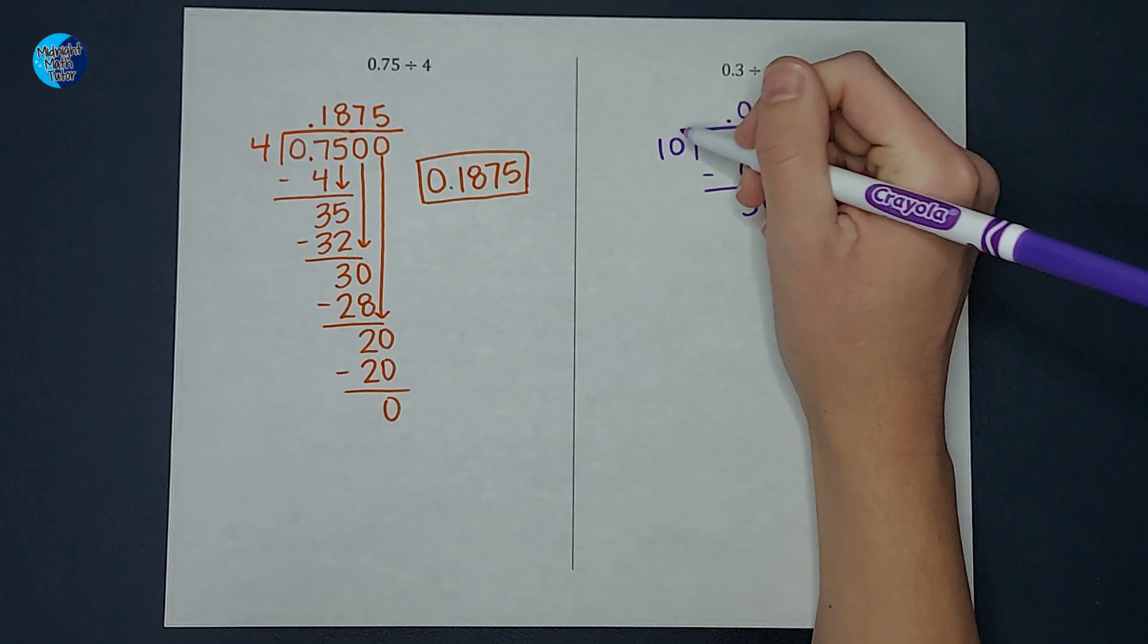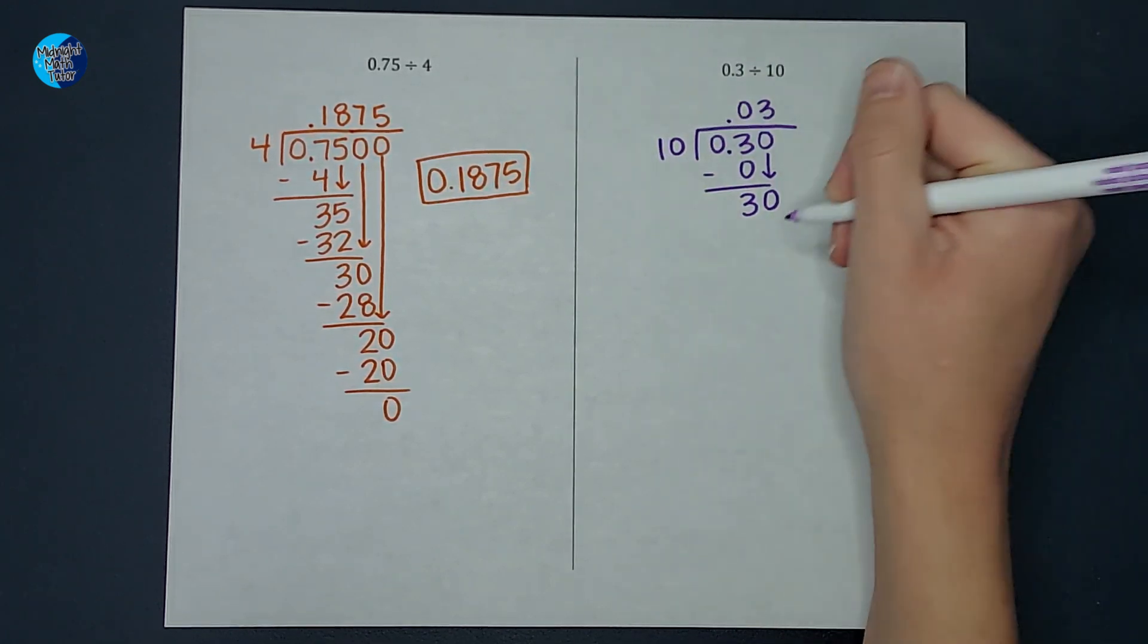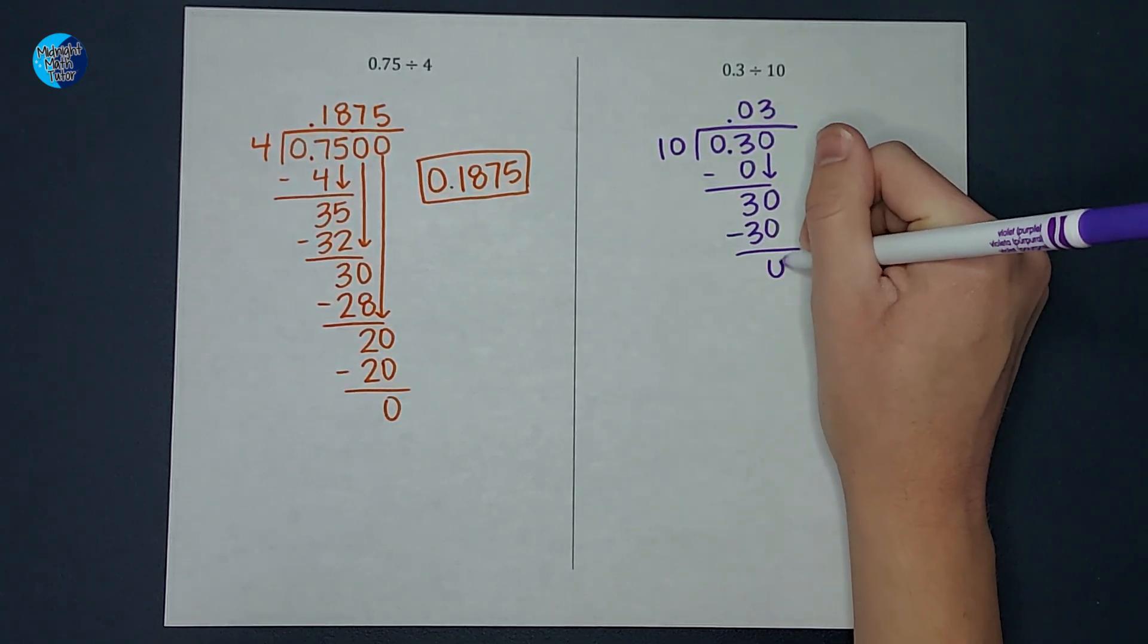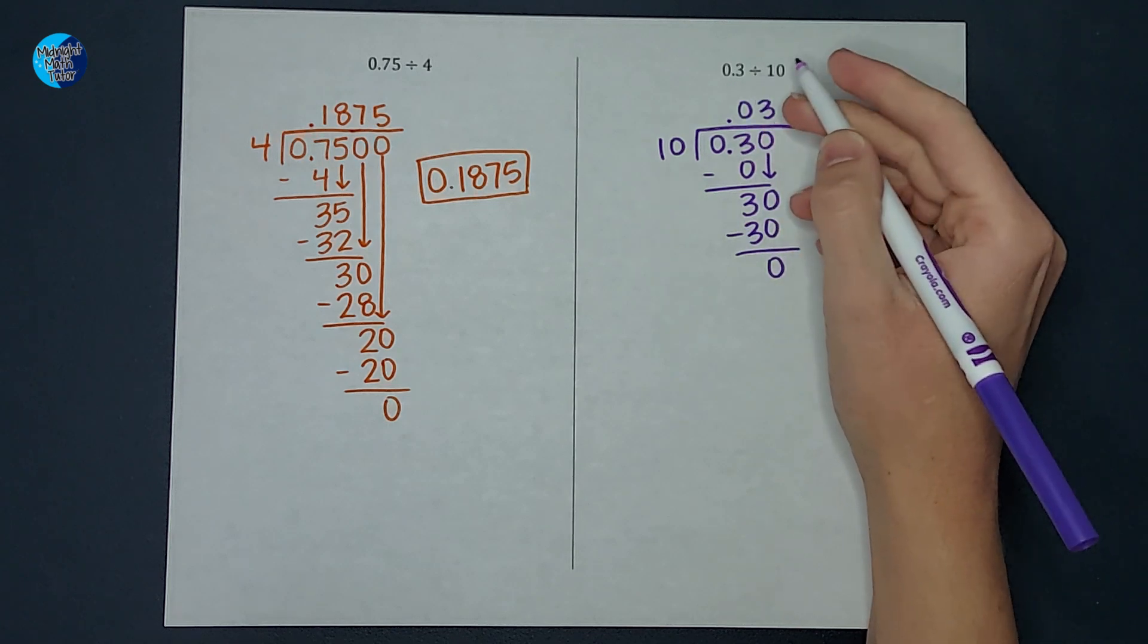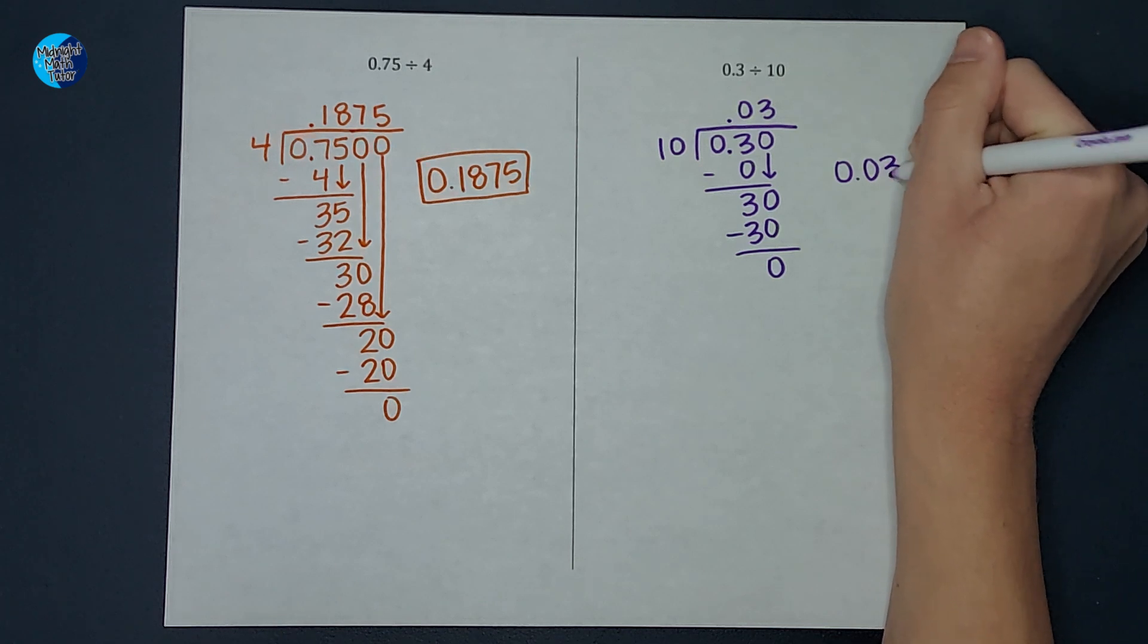And then I'm asking myself, how many times is 10 going to 30? Well, it goes in 3 times. 3 times 10 is 30. And guess what? I'm already done. So 0.3 divided by 10 is 0.03.